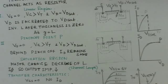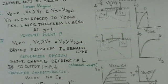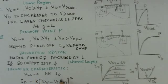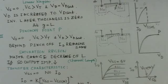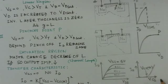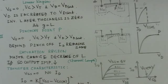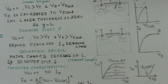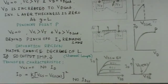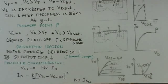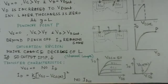Now we can see the drain characteristics — that is drain current for various values of gate-to-source voltage. For Vgs equal to zero, there is no Id. The transfer characteristics show Id versus Vgs. For Vgs equal to zero, there is no Id. The drain current Id is given by K times (Vgs minus Vgs_threshold) squared. The value of K is a constant. There is no Idss term here, unlike what exists in a junction FET.